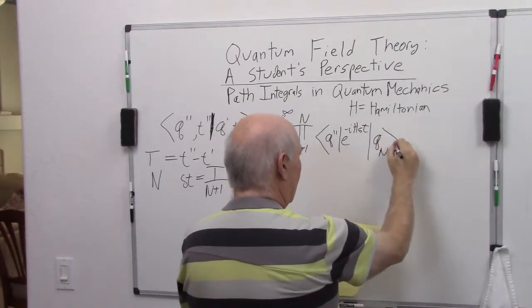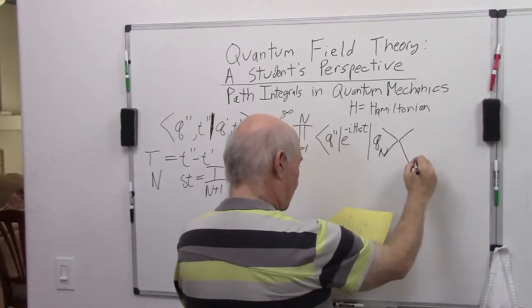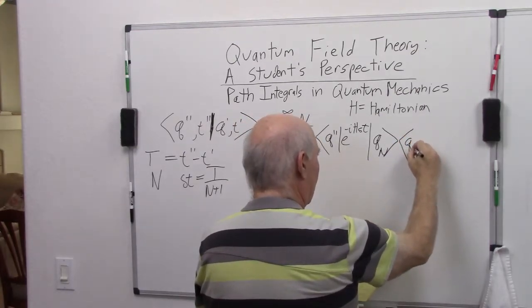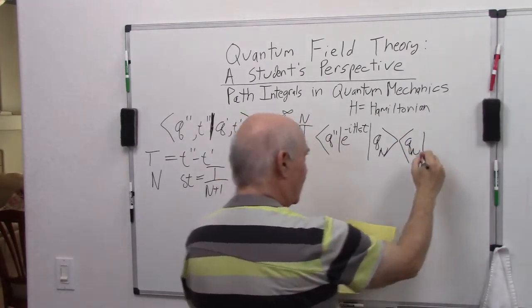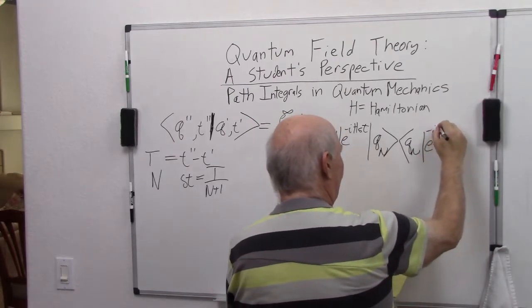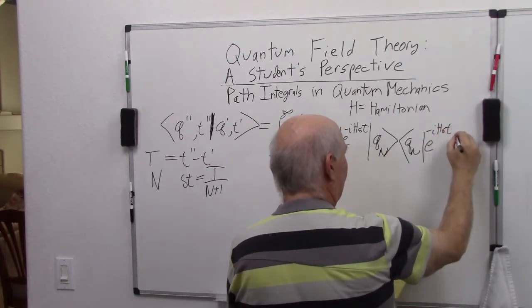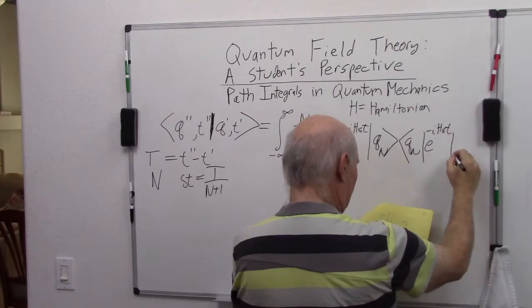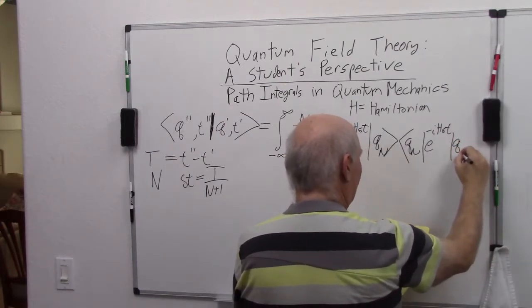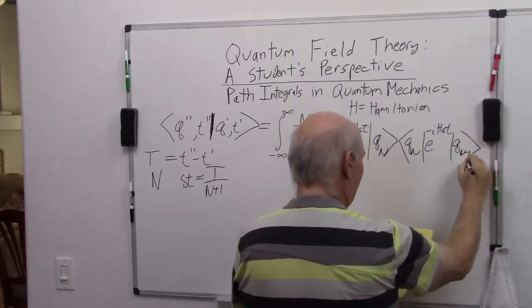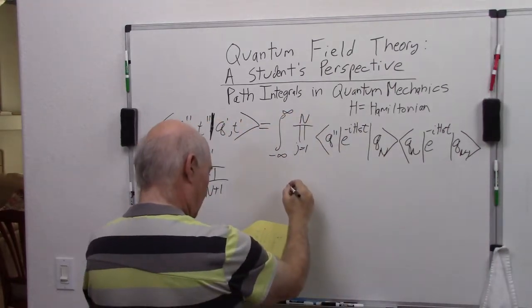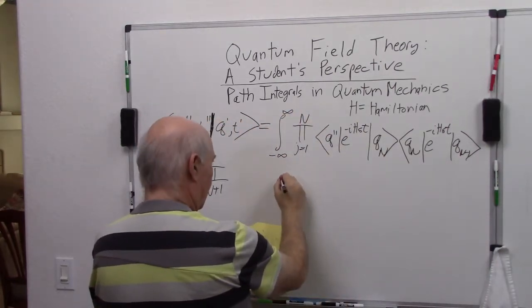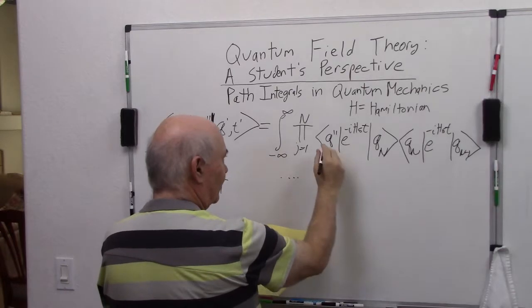Then I'm going to have q n here, I'll explain in a second where this comes from, and I'm going to have q n here again. Then another e to the minus i h delta t and q n minus 1.